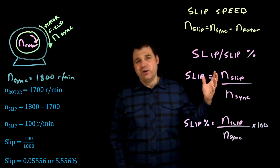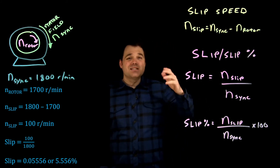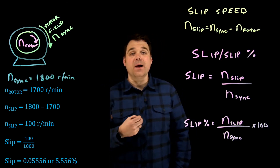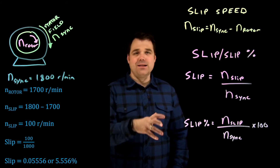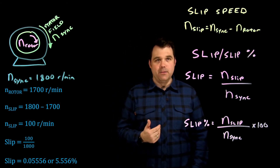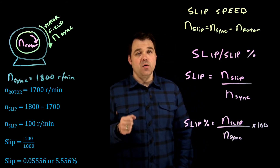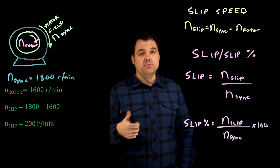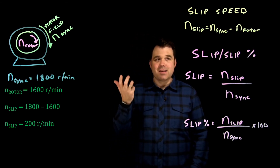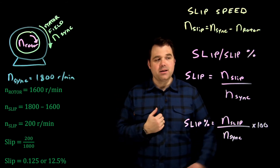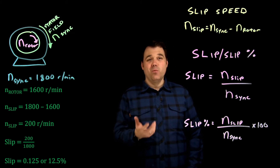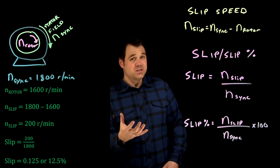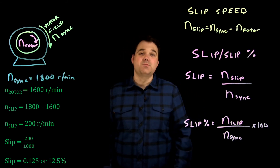That's a pretty regular full-load slip. As I start to add load to that motor, we know the rotor would slow down — just like when you add rocks to the back of your truck, you slow down a bit. So if the rotor speed goes down to 1600 RPM, our slip speed goes up to 200. We do the math: 200 divided by 1800 — slip speed divided by sync speed — and now we're at 0.125, or 12.5% slip. Under more load, I have more slip, and now I'm inducing a stronger magnetic field to try to generate that torque and speed up that motor again.